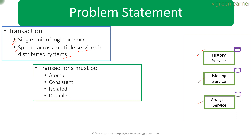When it comes to transactions, there are certain properties that must be maintained. First is atomicity — the task should be atomic. It should be consistent throughout, isolated meaning it should not be disturbed by other concurrent operations, and durable — when committed, it should be persistent in the database even if there is some failure after committing. These are the ACID properties that must be maintained whether in a monolithic application or microservices architecture.